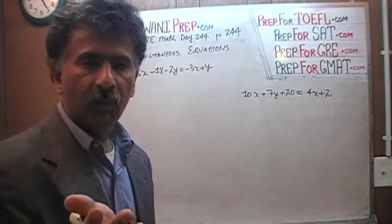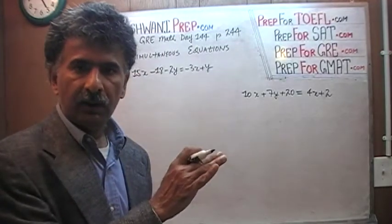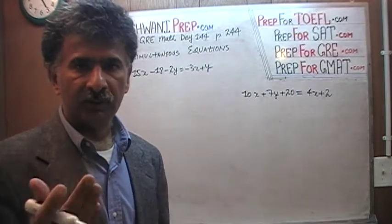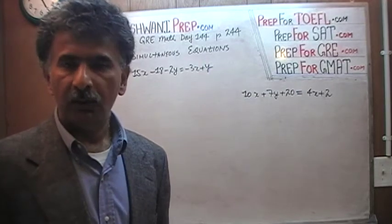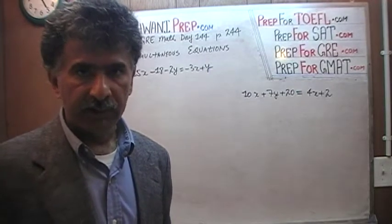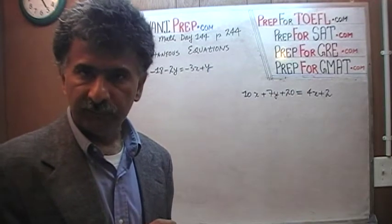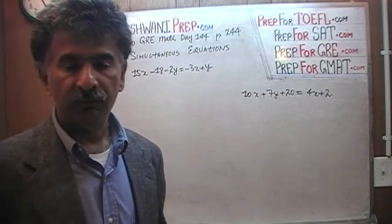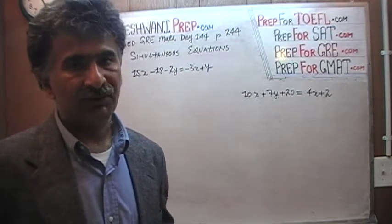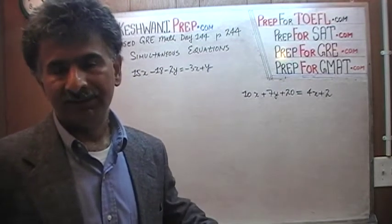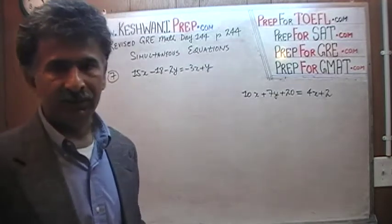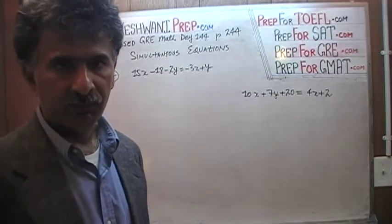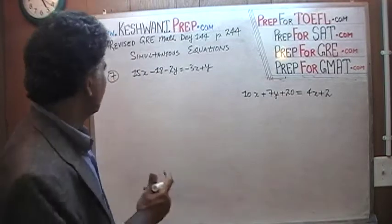We are going to bring all the unknowns on the left-hand side and the known quantity — the constant, the numerical values — on the right-hand side. Why the numerical values on the right-hand side and the unknowns on the left? There is no good reason for it. It's just a convention, just a tradition — that's how it's always been done. There is no mathematical reason behind it.